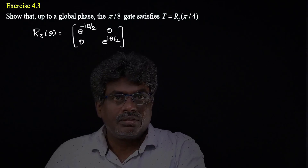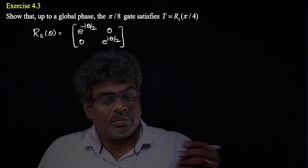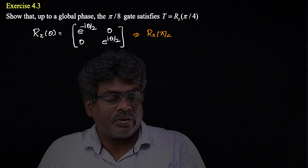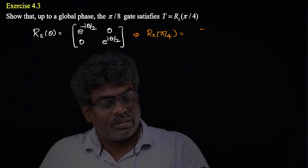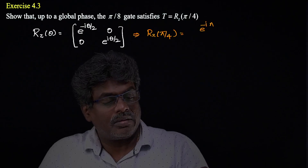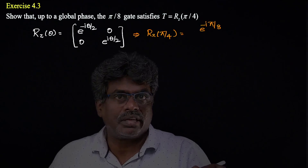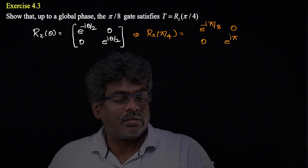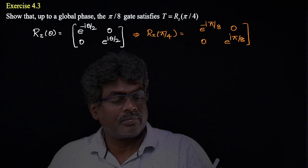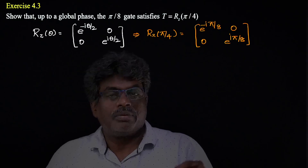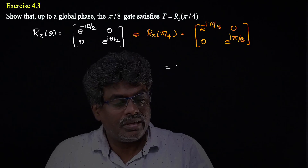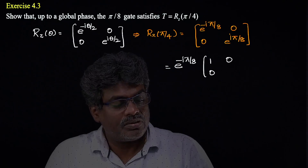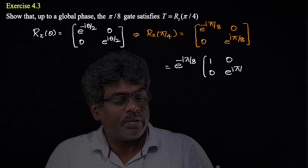Now, they have given θ = π/4, so Rz(π/4) has e^(-iπ/8) and e^(iπ/8) on the diagonal. Taking the common factor e^(-iπ/8), we get e^(-iπ/8) times the matrix with 1 and e^(iπ/4) on the diagonal.